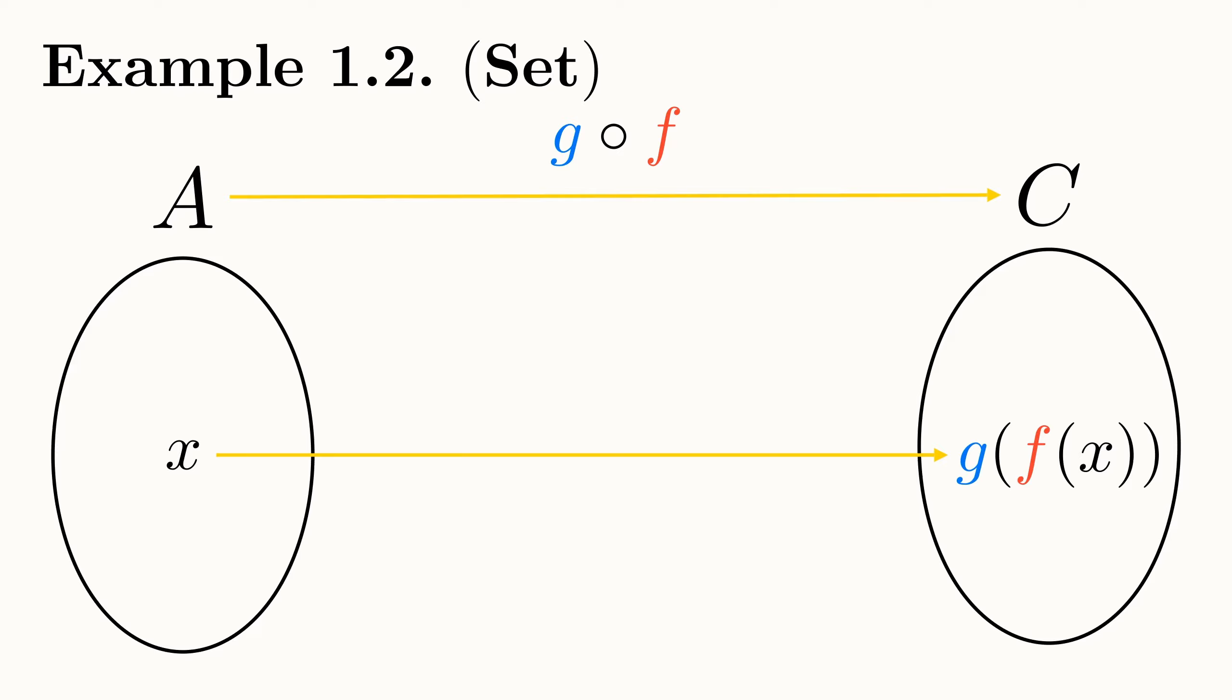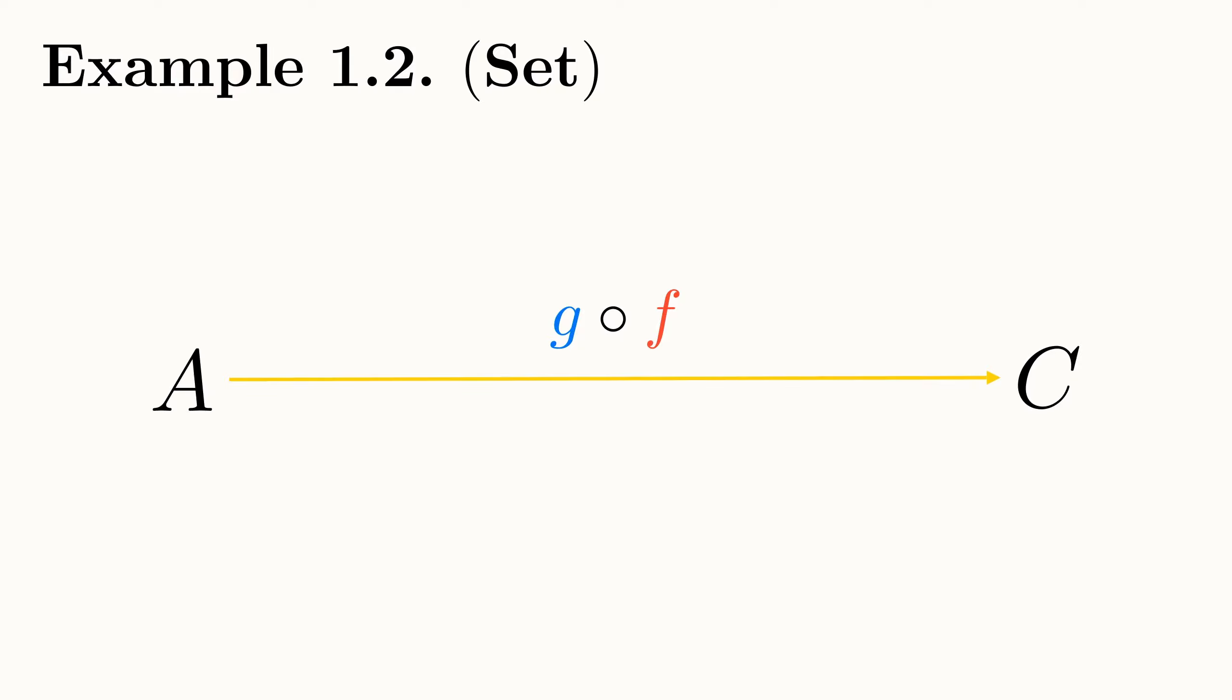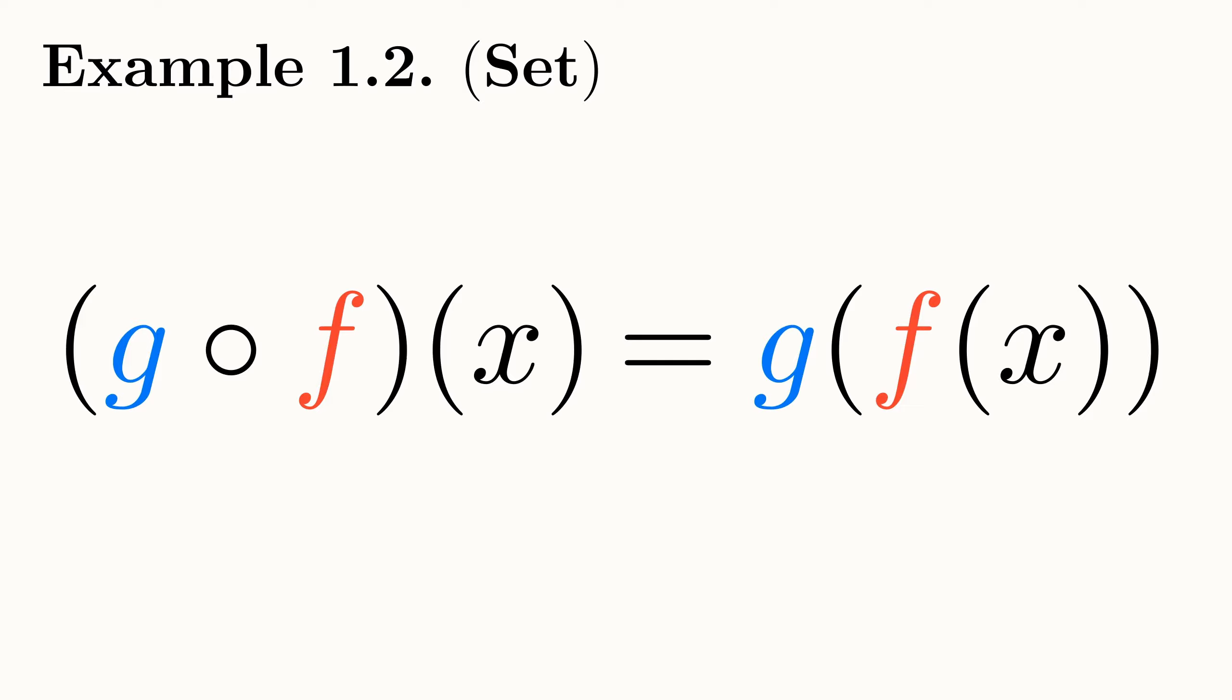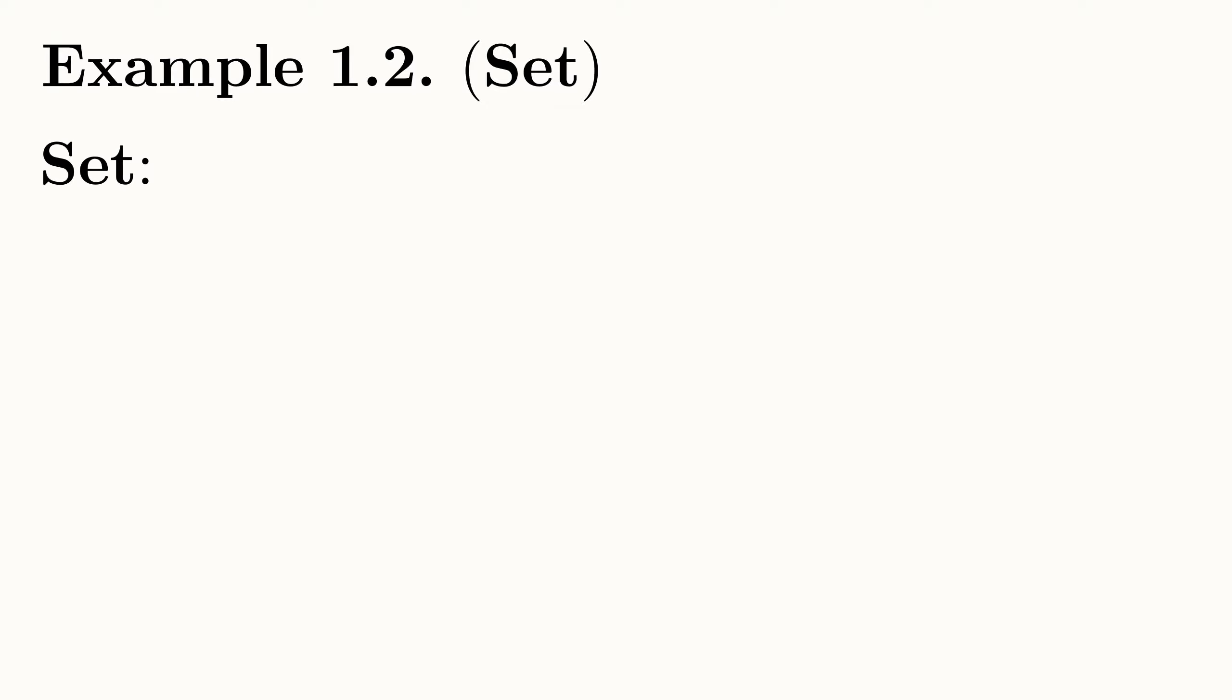This also gives an explanation of why composition is seemingly written backwards. We write g follows f when composing two arrows, even though the path through the category goes f then g. This is because in categories like Set, where we have maps as arrows, we write g follows f of x as g of f of x, which is also in this backwards order. Composition defined like this is associative and satisfies our requirements concerning when we are allowed to compose arrows, so it is a valid composition operation in our category.